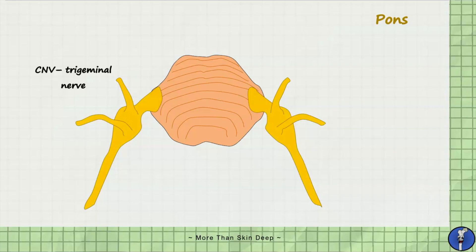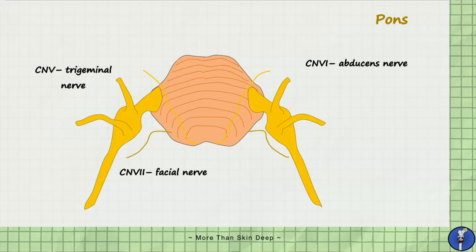The fifth cranial nerve — the trigeminal nerve — originates from the lateral aspect of the midpons. The sixth, seventh, and eighth cranial nerves originate from the pontomedullary junction, which is simply the junction between the pons and the medulla. In greater detail, the sixth cranial nerve — the abducens nerve — originates close to the midline of the pontomedullary junction, whereas the seventh cranial nerve — the facial nerve — comes off the lateral aspect. The eighth cranial nerve — the vestibulocochlear nerve — originates from just lateral to the facial nerve.